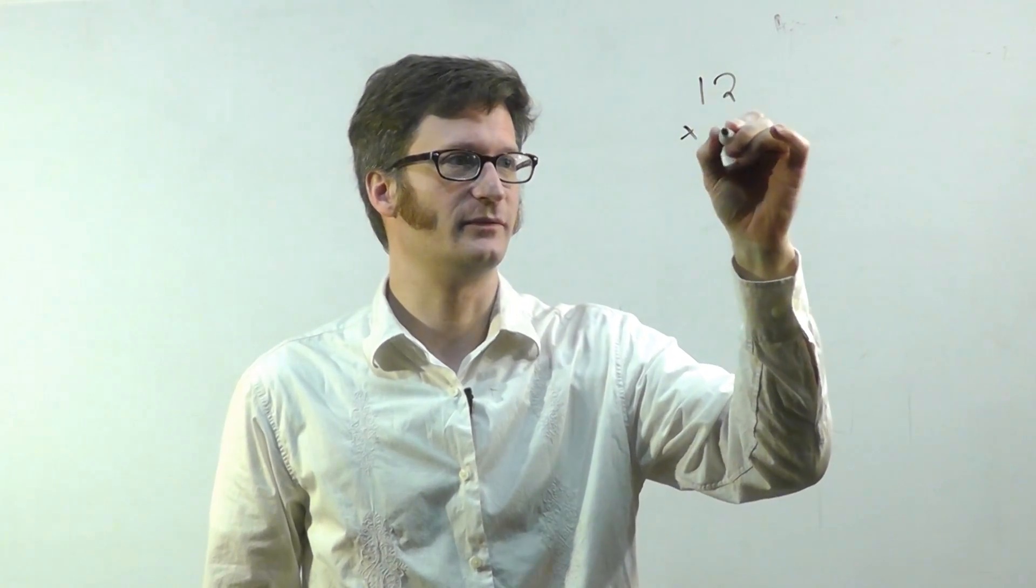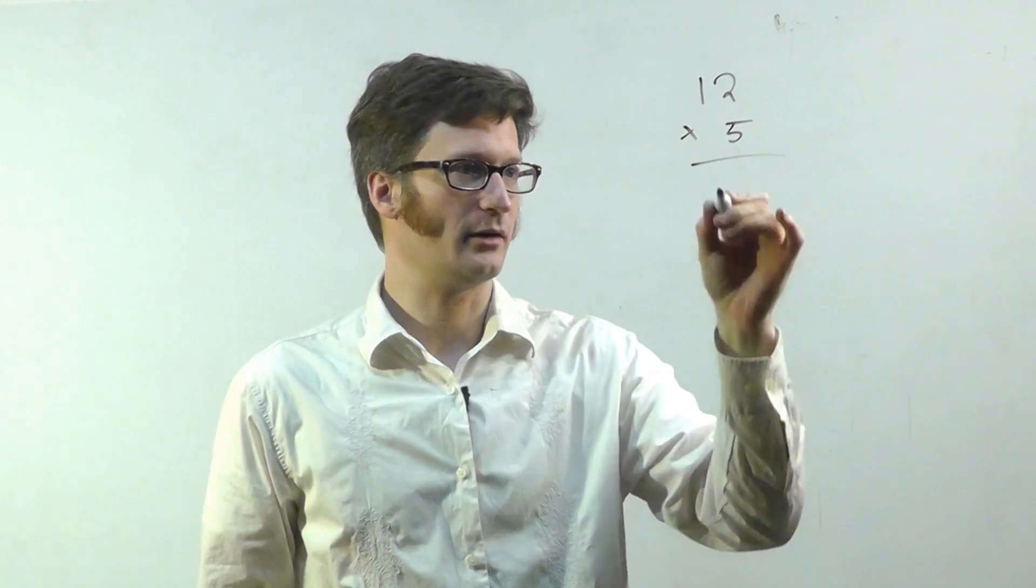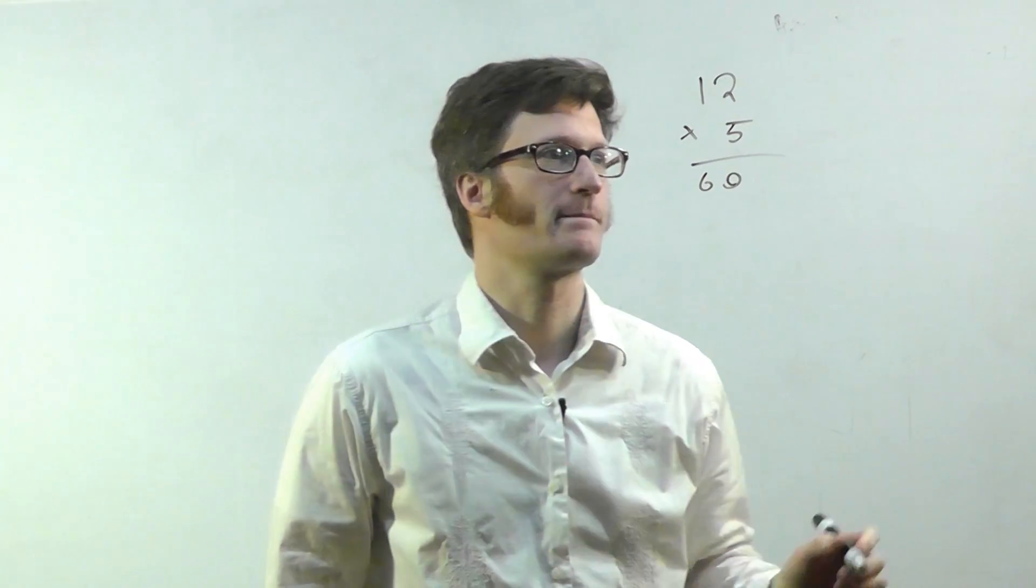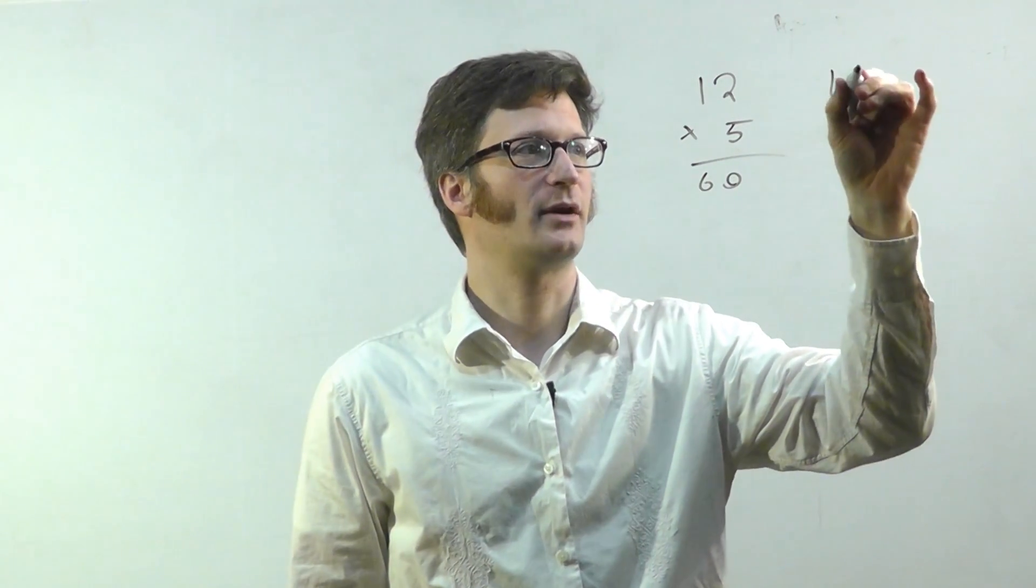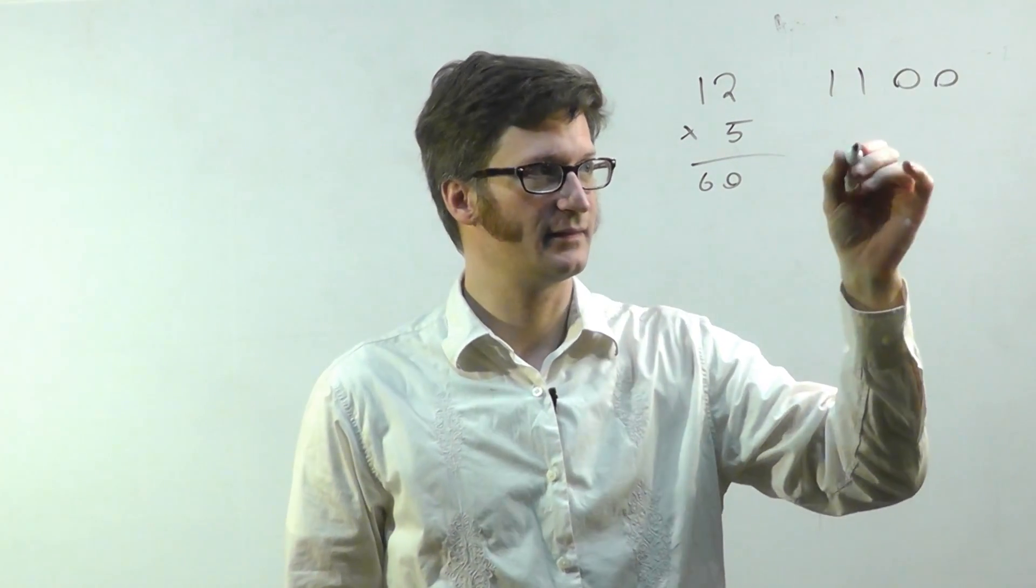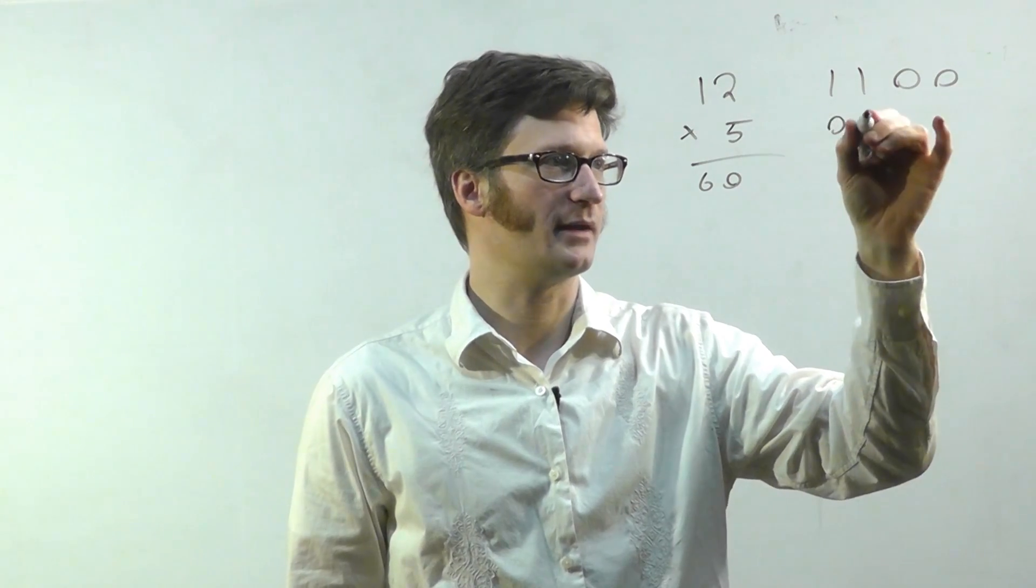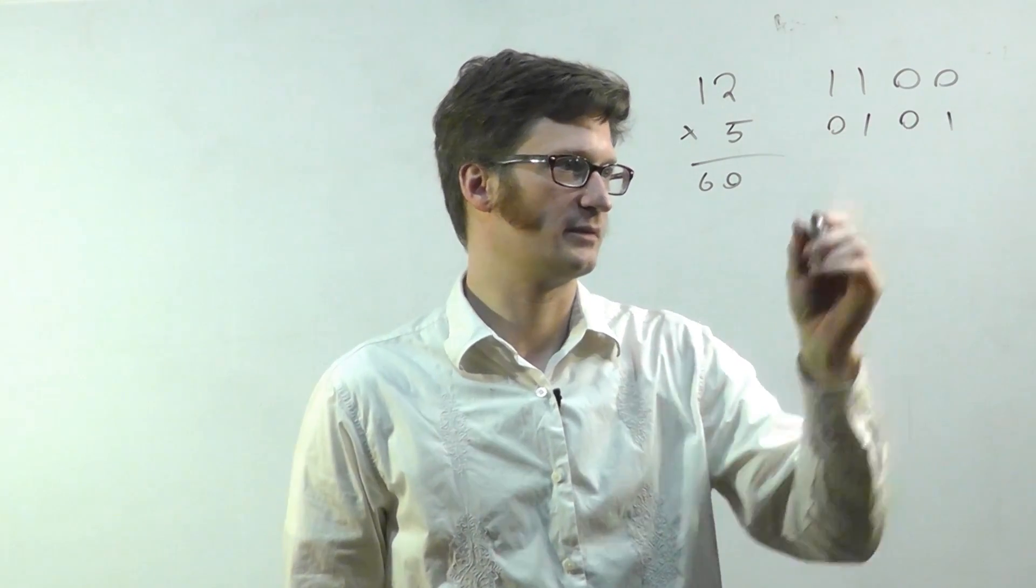So let's review how to multiply in binary. Let's say I have two numbers, 12 times 5. Well, that's 60. And if I have 12 in binary it looks like this. And 5 in binary is that.